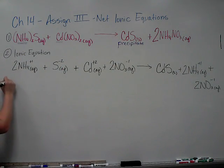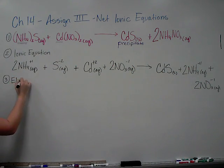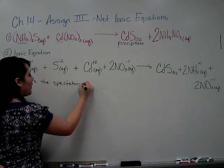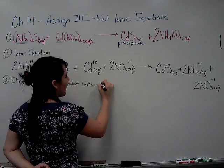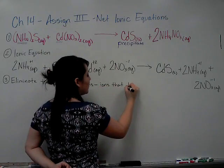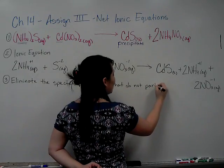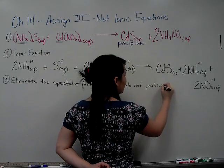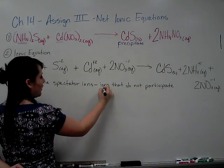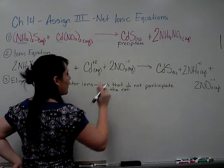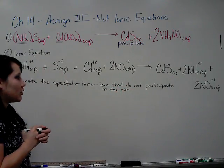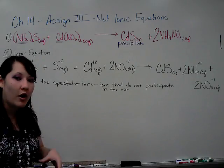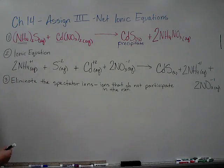Step 3, you want to eliminate the spectator ions. And the spectator ions are the ions that do not participate in the reaction. The word spectator is used because they are on the side. They don't actually have any chemical change whatsoever. They are not involved in the chemical reaction. So they're going to be eliminated.